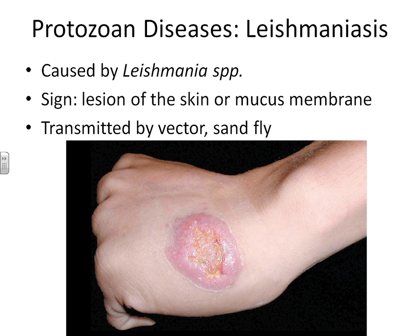Another protozoan disease is called leishmaniasis. Some people pronounce this 'leishmania,' and that has to do with the effect that the protozoan can have on the brain, causing people to have a kind of manic effect. Whenever you are bitten by the vector, the sand fly, it puts the Leishmania protozoan into your bloodstream. You get a really nasty lesion at the site of infection. The lesion will eventually go away, but you have some worse side effects.